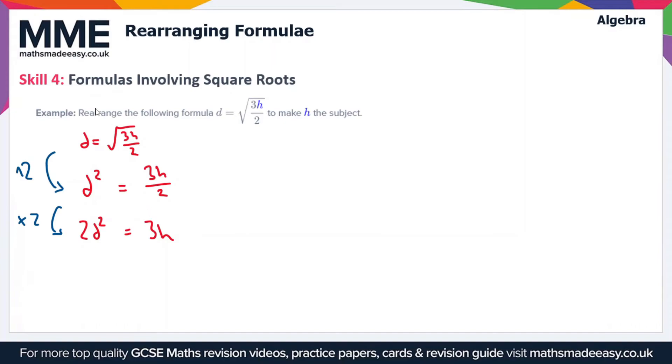And then finally we just have to divide by 3 to get h on its own. So we get 2d squared over 3 is equal to h. If you want you can rewrite this in the other order: h equals 2d squared over 3. But both are acceptable answers when you want to rearrange to make h the subject.